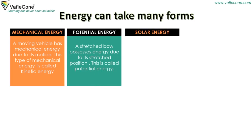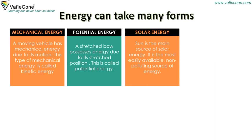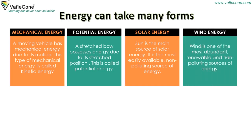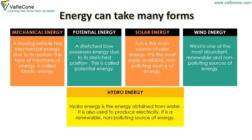Solar energy: the sun is the main source of solar energy. It is the most easily available non-polluting source of energy. Wind energy: wind is one of the most abundant renewable and non-polluting sources of energy. Hydro energy: hydro energy is the energy obtained from water. It is also used to produce electricity and is a renewable, non-polluting source of energy.